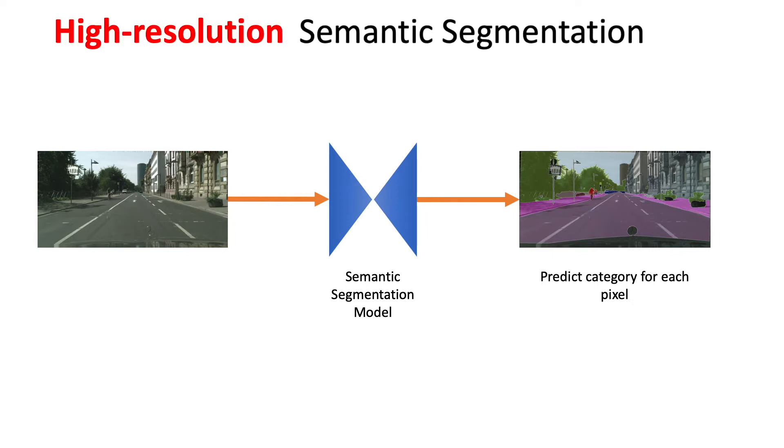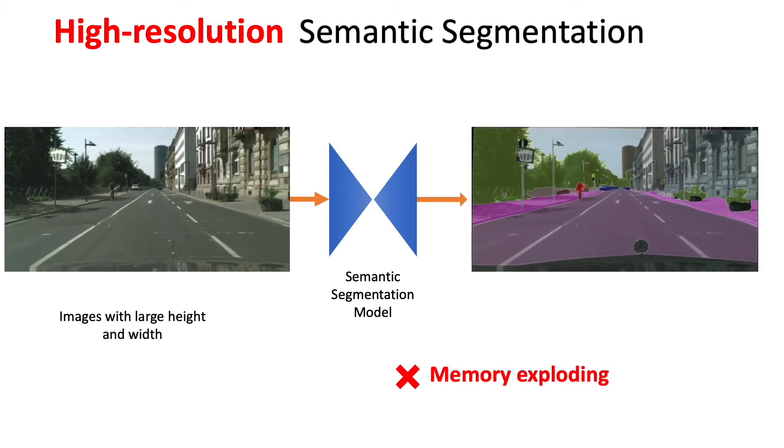In high-resolution semantic segmentation, the input image is in a very large size, more than 4 million pixels. This task causes the memory to explode when feeding the whole image to the model.